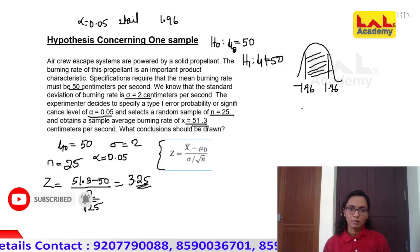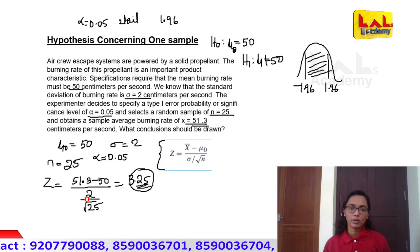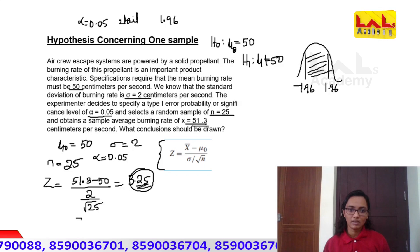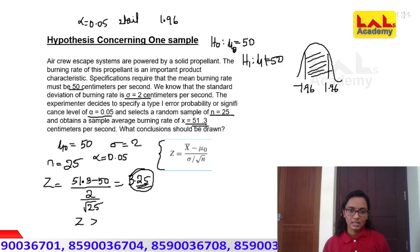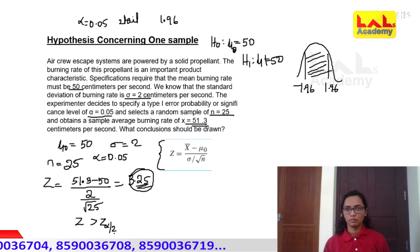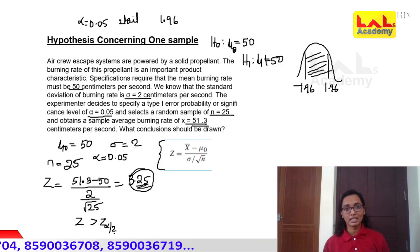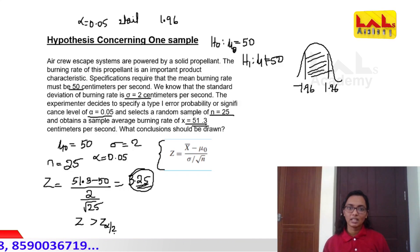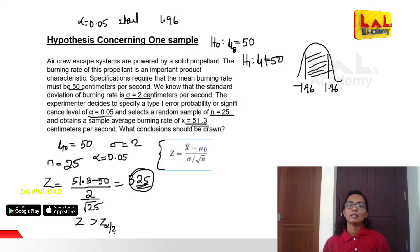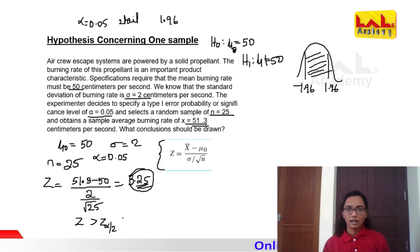We reject the null hypothesis if the test statistic falls outside the acceptance region. Since our calculated z-value of 3.25 is greater than the critical value of 1.96 — that is, z0 is greater than z-alpha-by-2 — we reject the null hypothesis and conclude the burning rate does not meet the specification of 50 centimeters per second.